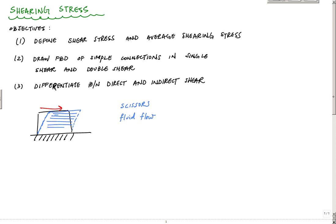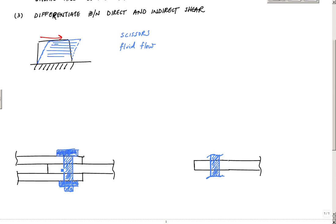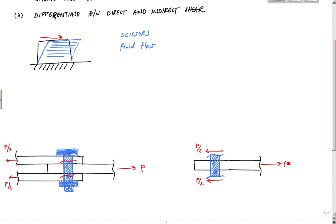Let's take a connection example. I pre-drew a bolted connection with three plates and a force P. If this whole connection is in equilibrium, each of the outer plates carries a force of P over two. If I isolate and cut the center plate, I can see that I have force P here, and for equilibrium I have a shear force acting along the cross-sectional area of the bolt — each shear force being P over two.